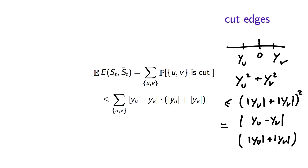So we have this inequality. When y_u and y_v are close, they are less likely to be separated, which accounts for the fact that we don't have a uniform distribution for the threshold. We had to use a non-uniform distribution because otherwise we would have trouble controlling the denominator of the expansion expression — the size of the set.